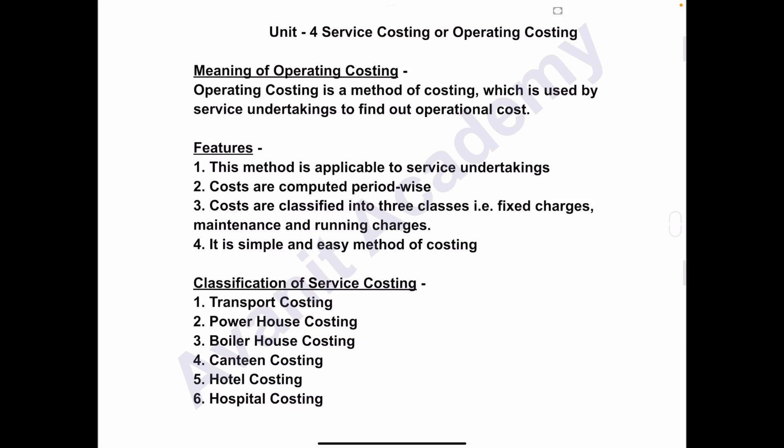Hi everyone, welcome to my channel. Today we are going to start Chapter 4: Service Costing or Operating Costing. As you know, some industries are engaged in production of goods — that is, conversion of raw material into finished product. For example, paper industry, textile industry, sugar industry, oil refining — all these types of industries produce goods.